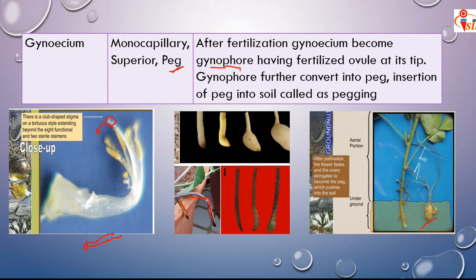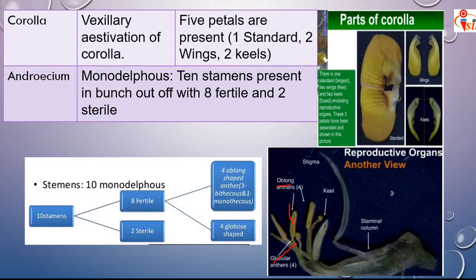The 10 anthers are present in a bunch — this condition is called monadelphous. Out of 10 anthers, 8 are fertile and 2 are sterile. Of the 8 fertile anthers, 4 are oblong in shape and 4 are globular in shape.